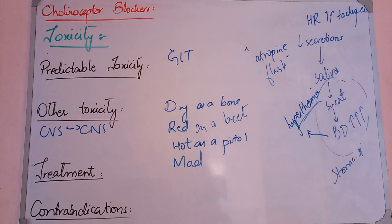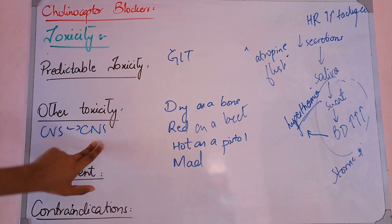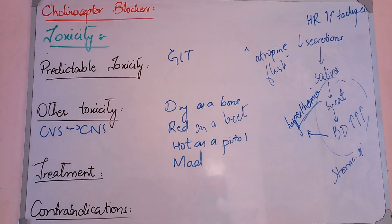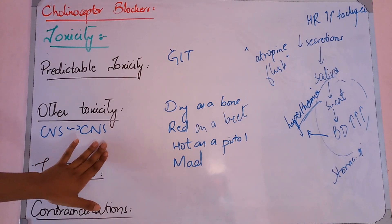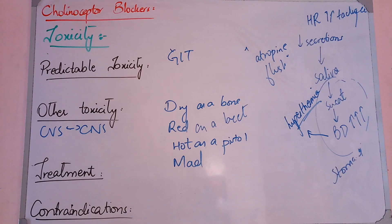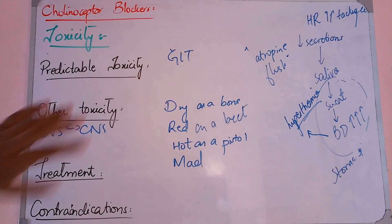In CNS, the toxicity relates to blockade of inhibitory pathways. Normally the CNS has a smooth inhibitory effect, but when we block it, the patient will go into convulsions. The patient can develop delirium — meaning they don't understand what's happening — then hallucinations of things that don't exist, and then convulsions. A person who has hallucinations and convulsions is considered mad. So this is called Mad as a hatter, because of the CNS effects including convulsions.